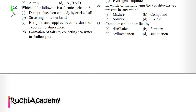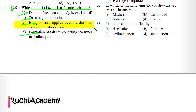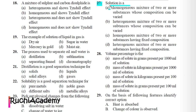Question 26: Which of the following is a chemical change? A) Dent produced on a car body by a cricket ball, B) Stretching of a rubber band, C) Brinjal and apples become dark on exposure to atmosphere, D) Formation of salts by collecting sea water in shadow pits. Correct answer is C. Brinjal and apples become dark due to chemical changes; the rest represent physical changes.